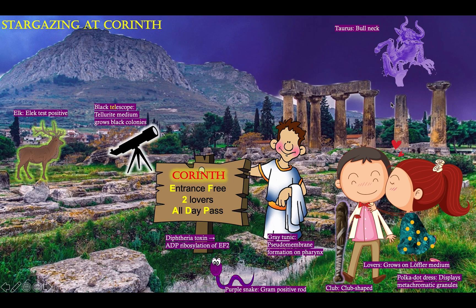What is the constellation that the telescope is pointed at? It's the constellation of Taurus, which is a bull. And that's to remind you that diphtheria is associated with a bull neck — a swelling of the neck — along with cervical lymphadenopathy.